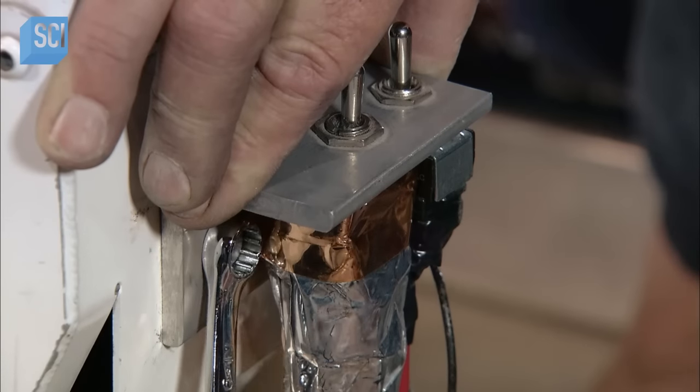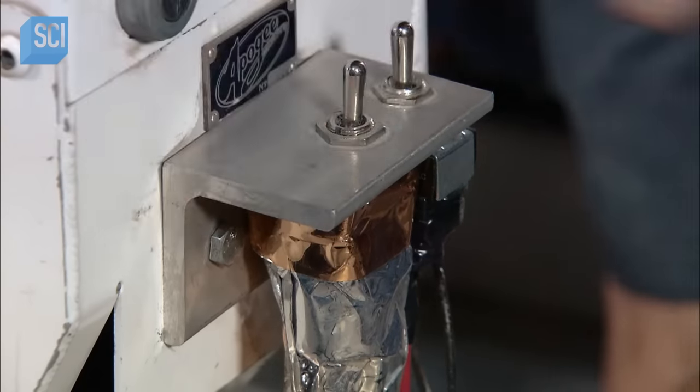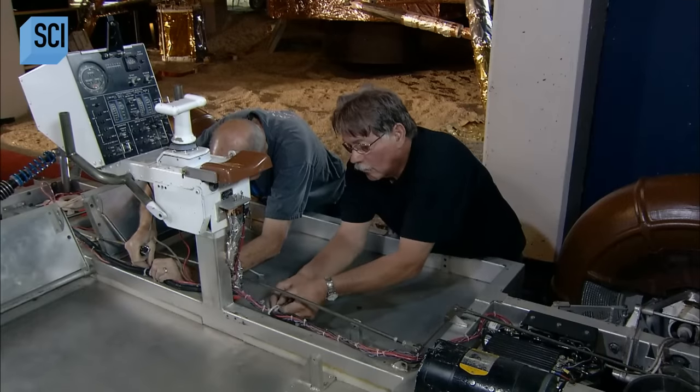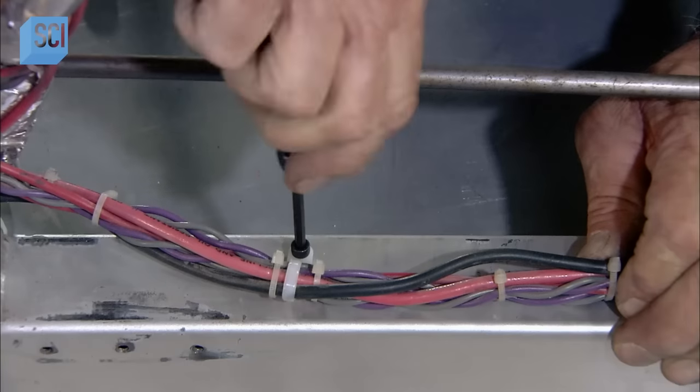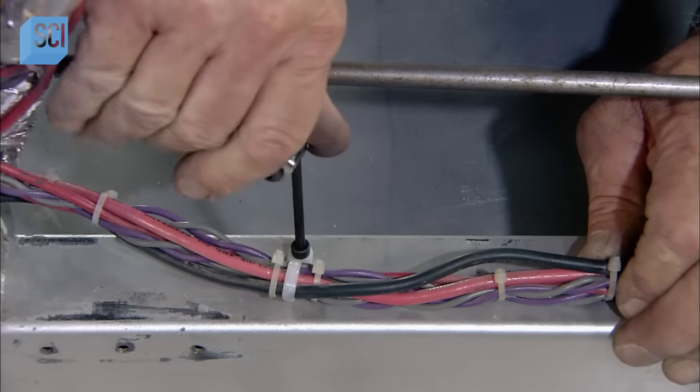They fasten the actuator switches to the steering housing, and then clip the wiring harness to the floor of the lunar rover.